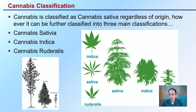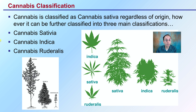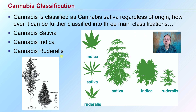The general classification of cannabis: cannabis is classified as Cannabis sativa regardless of its origin. However, it can be further classified into three main classifications — sativa, indica, or ruderalis. Ruderalis is the autoflower type, meaning those will flower based on age, not photoperiod. Indicas and sativas are photoperiod dependent. A general overview of leaf and plant structure morphology for each type can be seen here.